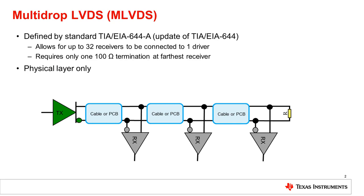Multidrop LVDS is defined by the TIA EIA-644A standard, which is an update of the TIA EIA-644 standard that defines point-to-point LVDS. The update allows for up to 32 receivers to be connected to one driver, and requires only one termination resistor at the furthest receiver.